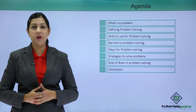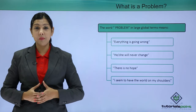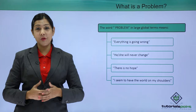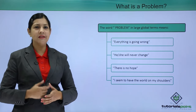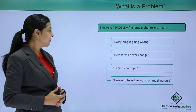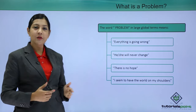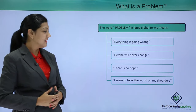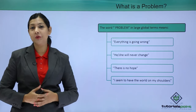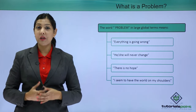Let's get started. If we have to define what exactly is a problem in a global way, certain phrases or sentences you might have used yourself or heard somebody else use — things like 'everything is going wrong for me,' 'nothing is right,' 'he or she will never change,' 'there is absolutely no hope in this situation,' and 'I seem to have the world on my shoulders.' How many times have you used such phrases yourself? In a global sense, a problem is all of these.